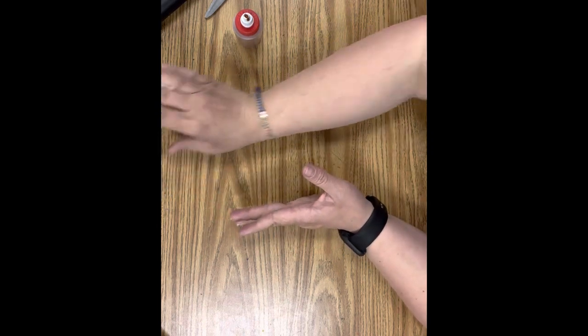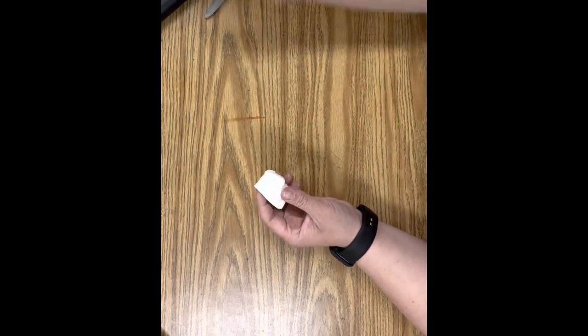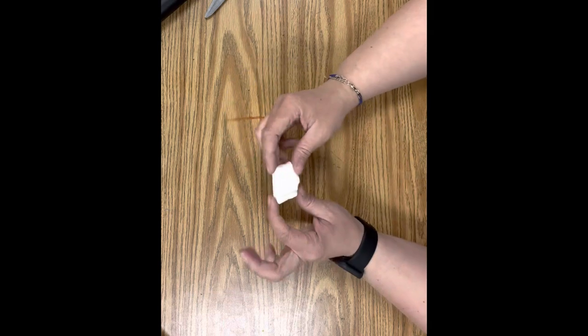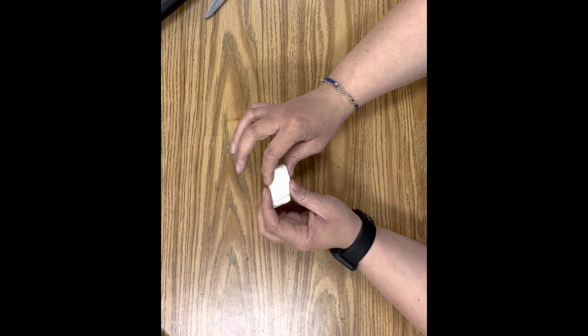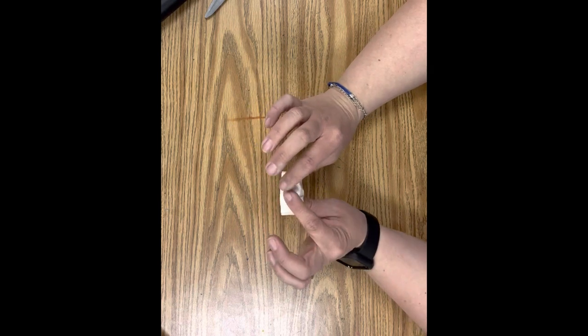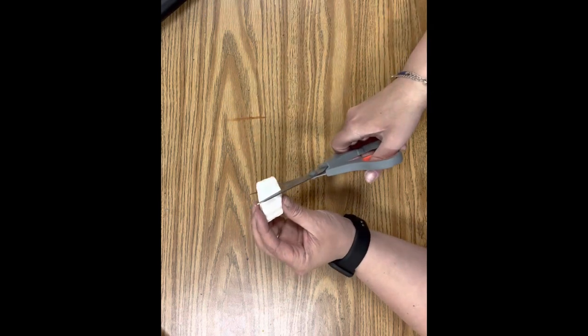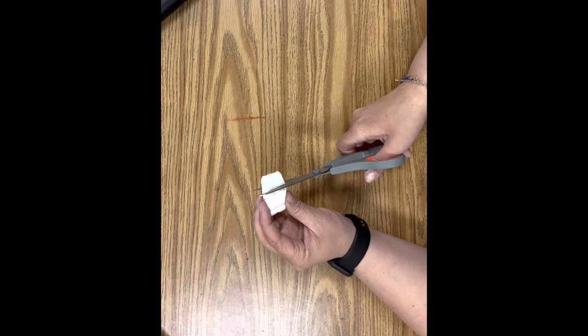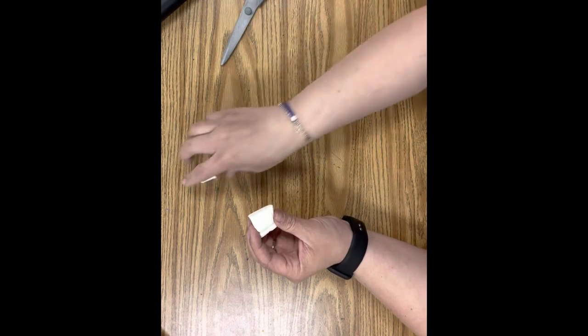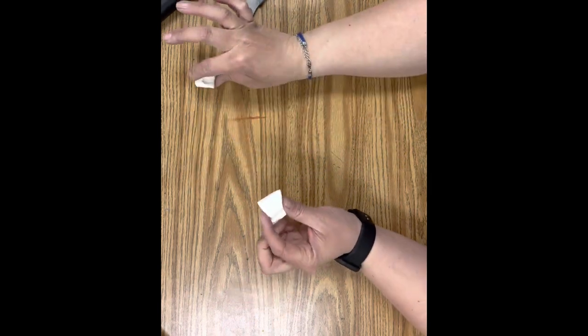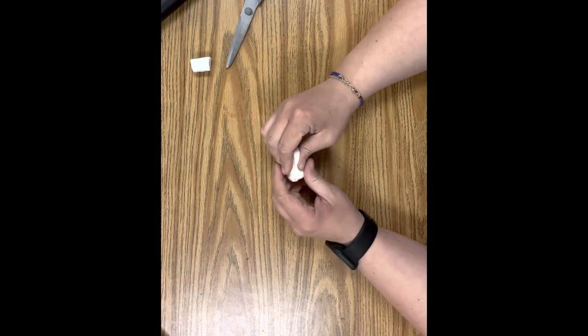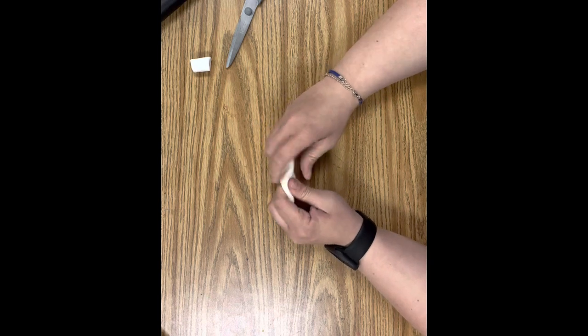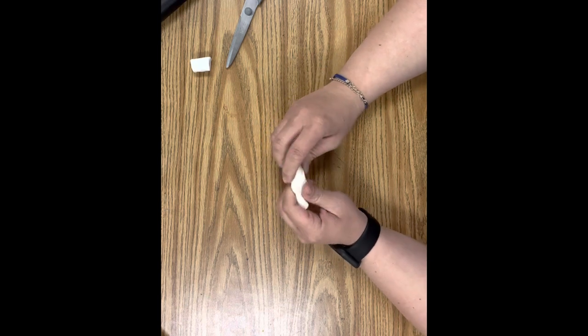Then set that aside and grab your smaller piece of Model Magic. Now this is going to be used for both our whipped cream and our cherry. Taking about a quarter of that and setting it aside for our cherry, we're going to use this first bit for our whipped cream. To make the whipped cream, you are simply going to roll a coil.